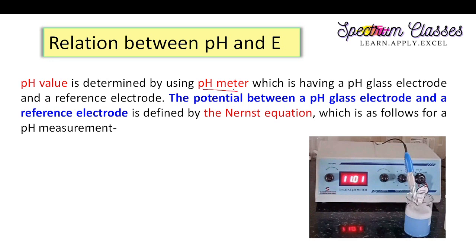The pH meter is used to determine pH values. It comprises two electrodes to make the assembly complete: one is the pH glass electrode and the other is the reference electrode. The potential difference between the pH glass electrode and the reference electrode is measured using the Nernst equation, and from there we can determine the value of pH.